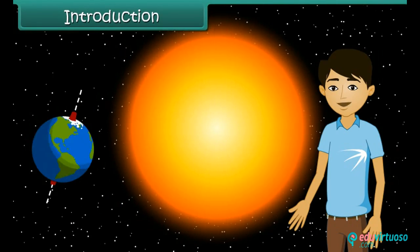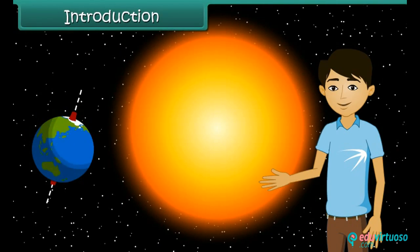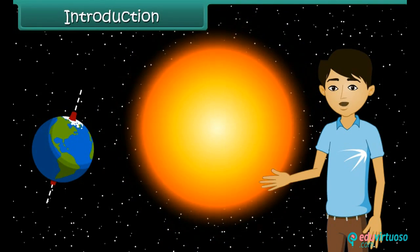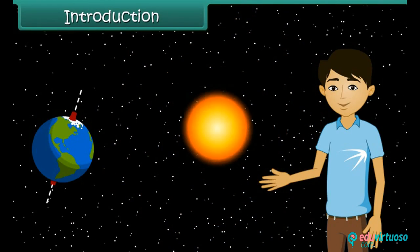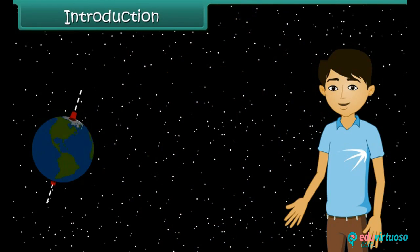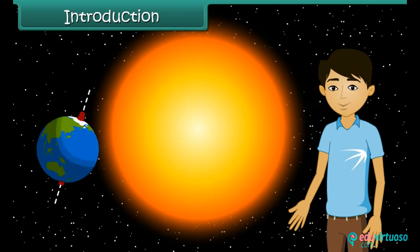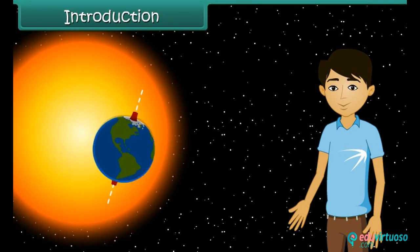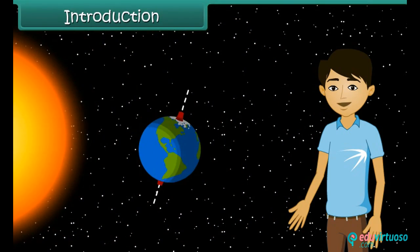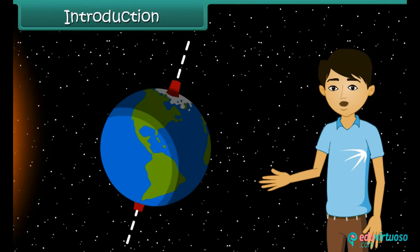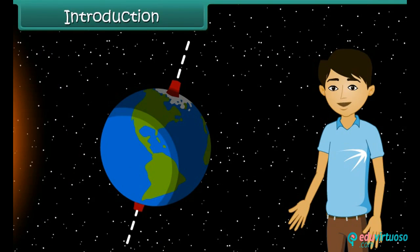Hello students, can you imagine how cold the earth would be if there were no sun? The sun is the earth's main source of heat. Only a little of the sun's heat reaches the earth; however, this is enough for life to exist on earth.